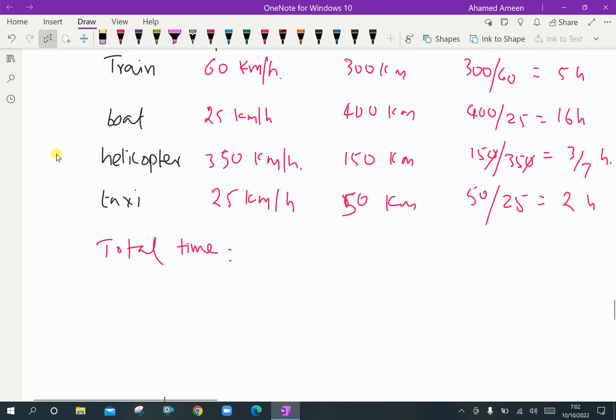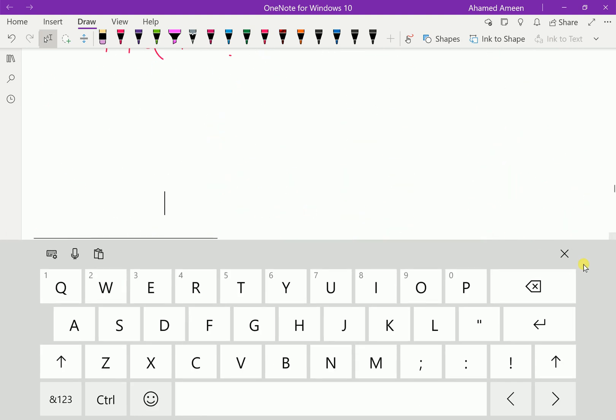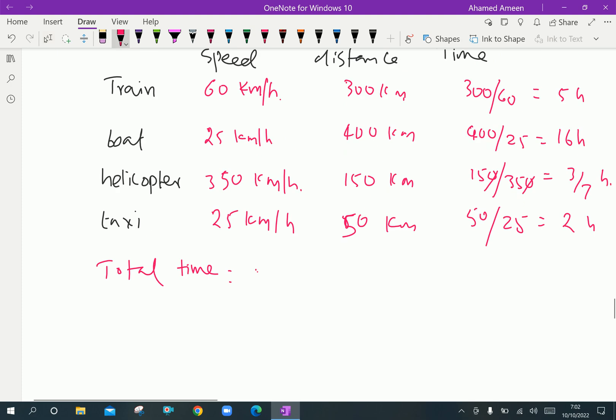Now total time is here, look at here. 5 plus 16 plus 3 by 7, let us calculate 3 by 7, that is 0.429 plus 2 which is equal 16 plus 5 is 21, 23 point 429, approximately 23.43 hours.